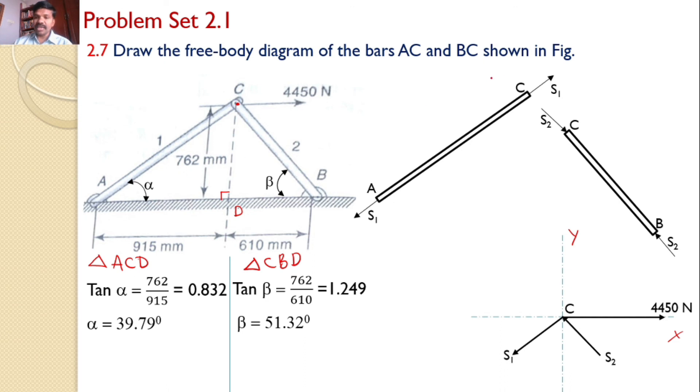It is exactly opposite direction. So if this is upwards, from point C the force is like this. So this value is S2 and the angle made by the horizontal with S1 is alpha, we calculated that value is 39.79, and angle made by S2 with the horizontal is 51.32 degrees.